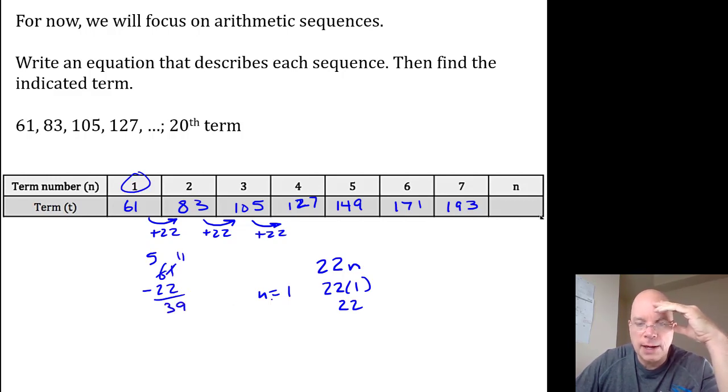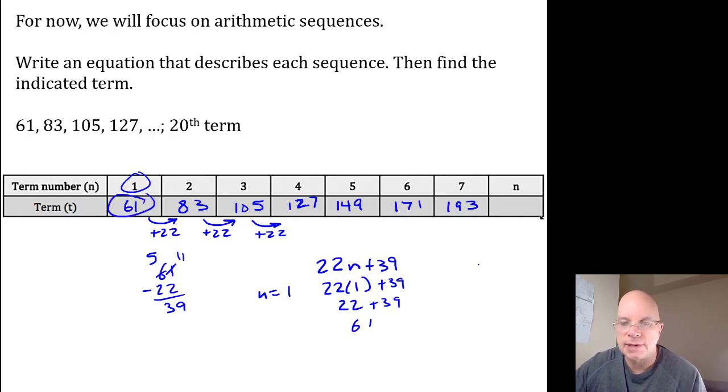So I add 39 to the rule. That would give me 61, but then I need to test that.